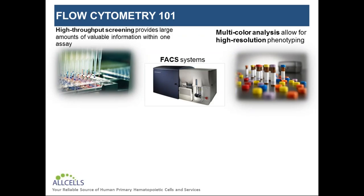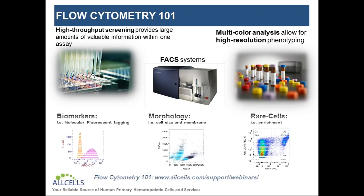Flow cytometry is an important tool in hematology and immunology in particular, and helps researchers understand the behavior of all these different blood cell populations. It allows for the detection of membrane-bound and intracellular proteins, which are indicative of cell phenotype or functionality, and flow cytometry can serve as a platform for enriching cell subpopulations, particularly those that are rare or found in low percentages in the blood. The advantages of flow cytometry over other techniques are its capacity for high-throughput screening and the ability to perform multi-color experiments in which many different cell markers can be simultaneously analyzed.